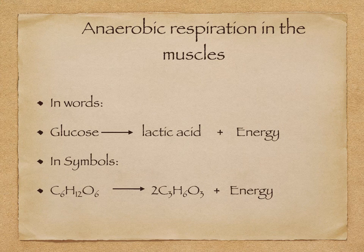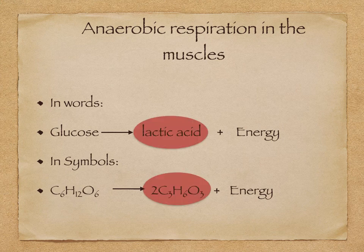The word equation is: glucose is converted into lactic acid and energy. If you're doing extended, you need to know the equation in symbols: C6H12O6 → 2C3H6O3 + energy. Lactic acid is poisonous, so it must be removed from the muscles. It is taken to the liver and broken down using oxygen.